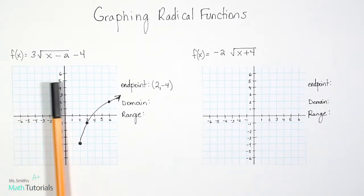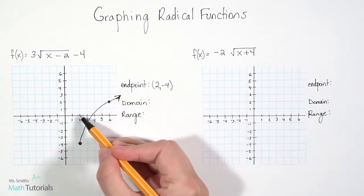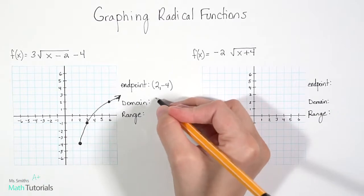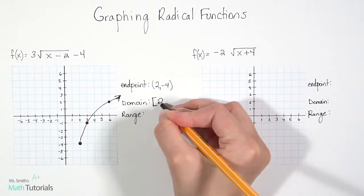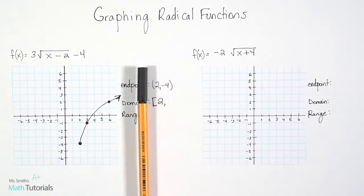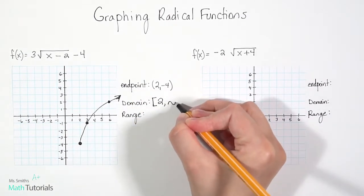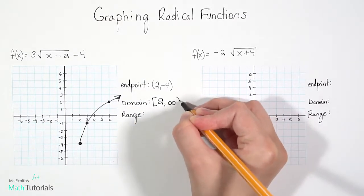So remember, for domain, we read left to right. Coming from the left, the first place I hit is positive 2 on my x values, and it's a solid point. So it gets a bracket. And then when I come in from the right, I hit an arrow. So an arrow means infinity, and infinity always gets a parentheses.